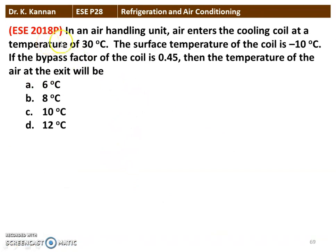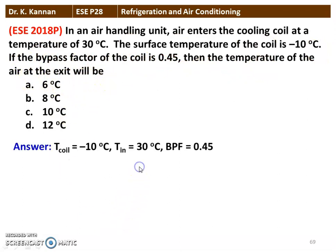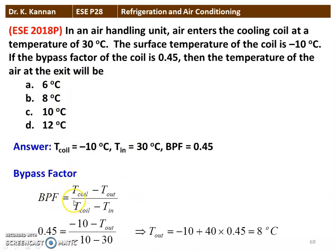Next question from the 2018 question paper: In an air handling unit, air enters the cooling coil at 30°C. The coil surface temperature is −10°C. The bypass factor is 0.45. Using BF = (T_coil − T_out) / (T_coil − T_in): 0.45 = (−10 − T_out) / (−10 − 30). Calculating, the outlet temperature is 8°C. Option B is the correct answer.